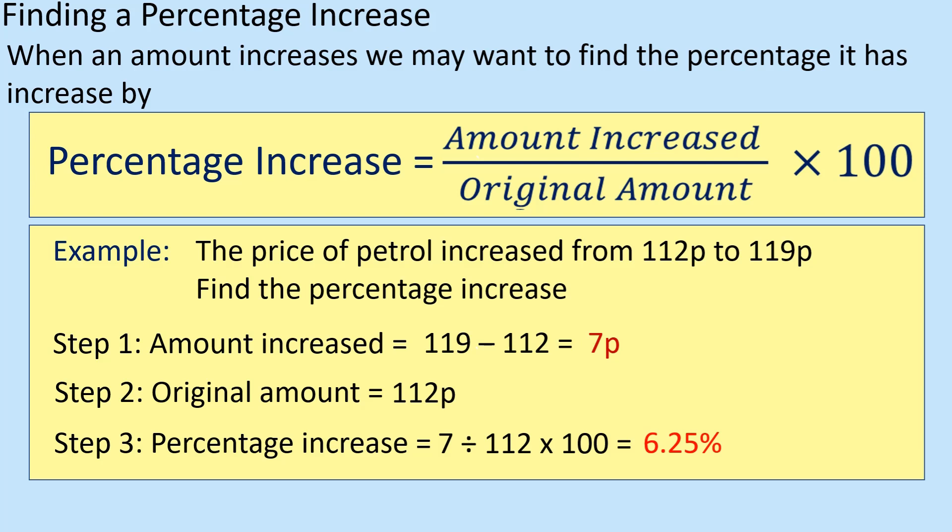Alright, which is 6.25%. So what it's gone up, or down, and up, because it's increasing, what it's gone up by, divided by what it started as, and then times by 100.